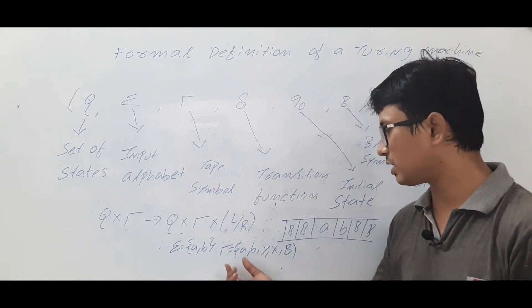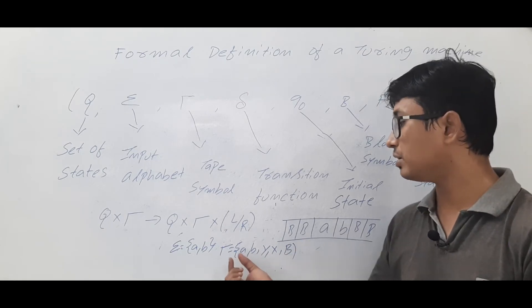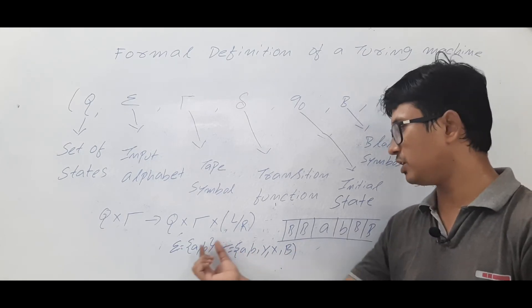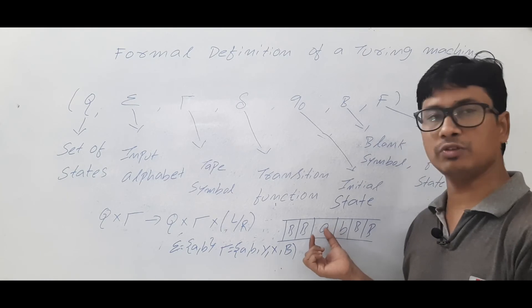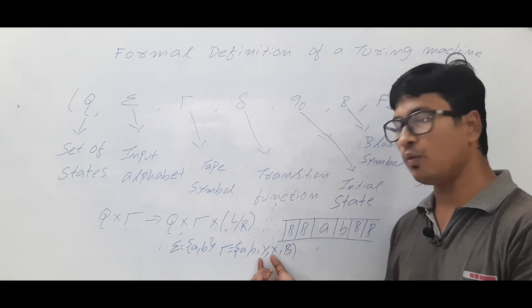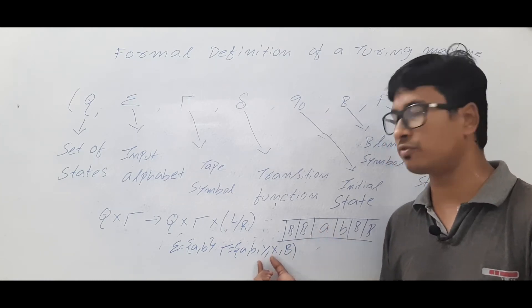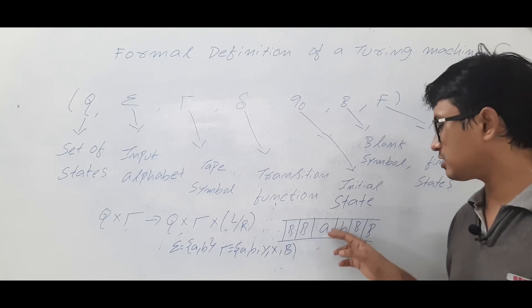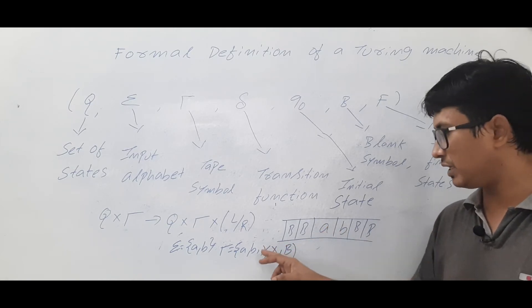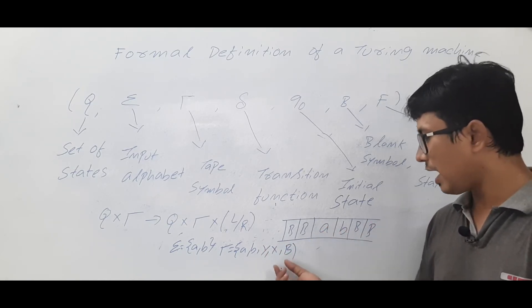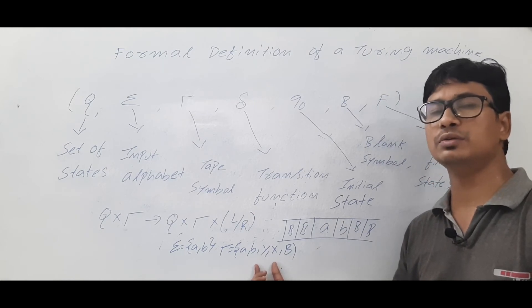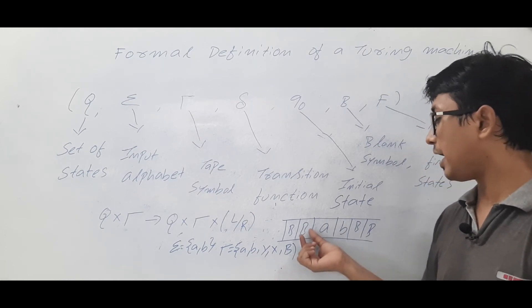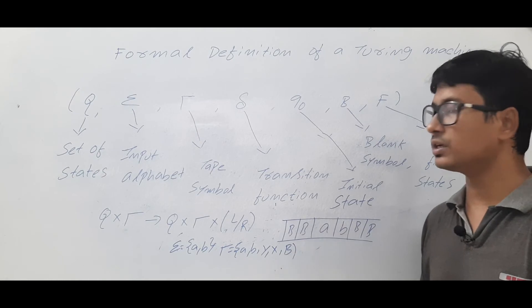Now let's discuss what are the tape symbols in this example. Tape symbols will consist of the input symbols because they will also be stored on the tape, and what are the extra symbols you want to modify. Let's take that in some example: you want to modify a to y and b to x. That's why I have taken them also as tape symbols, and a blank symbol is also a tape symbol.